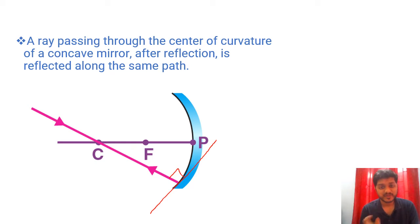see the tangent lies here and it itself is on 90 degree. So angle of incidence here is 0 degree. So it will retrace its path. It means that it will reflect through 0 degree only.